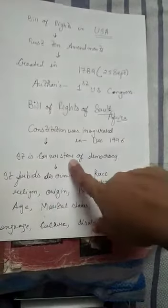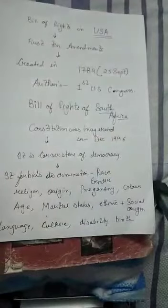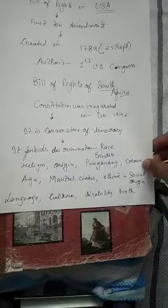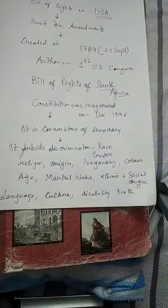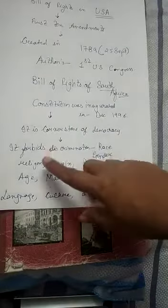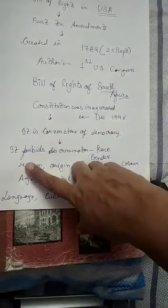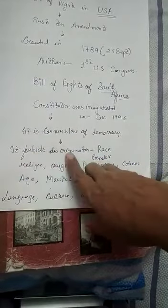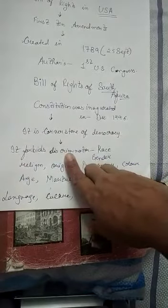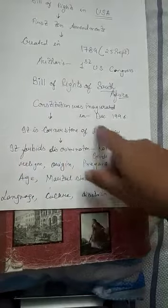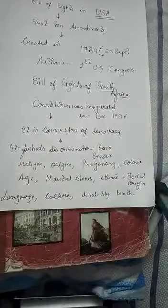Bill of Rights ko cornerstone - adhaar - democracy ka maana jaata hai. Is Bill of Rights mein, South Africa mein, sabse special baat yeh hai ki woh forbid karta hai - forbid ka matlab hai manaa karta hai - discrimination. Sirf skin color par nahi, yahan bahut saare factors diye hue hain. Like it prohibits discrimination on the basis of race, gender, dharam, origin.